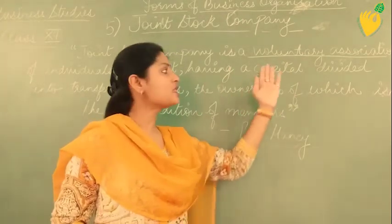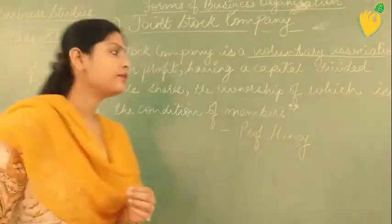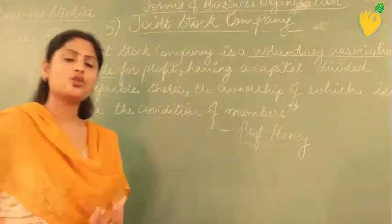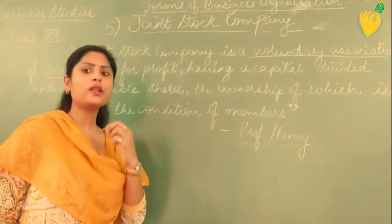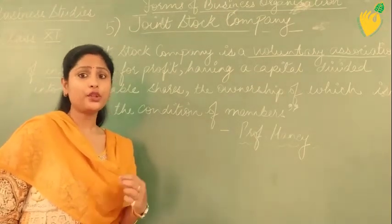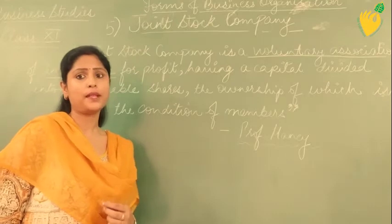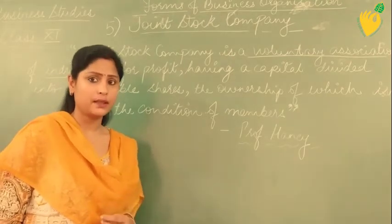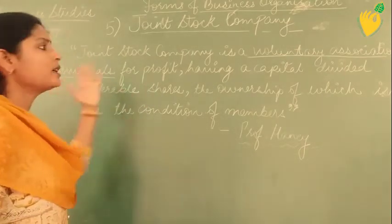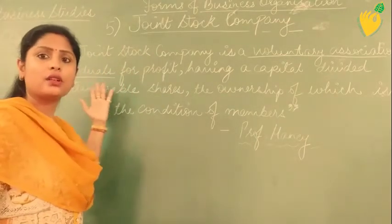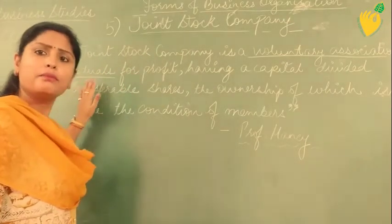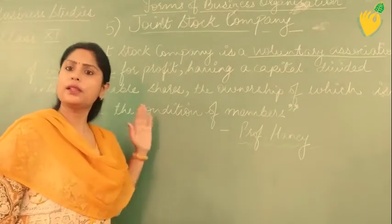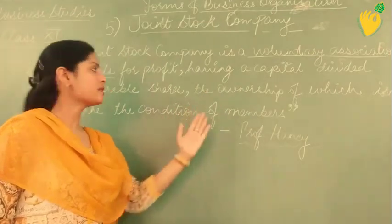So Joint Stock Company is a voluntary association of individuals. You, me, all of us can join this Joint Stock Company. One compulsory condition to join and run a Joint Stock Company is that the person should be above the age of 18. So here, a voluntary association of individuals — many people who have a will to start a firm can follow this.